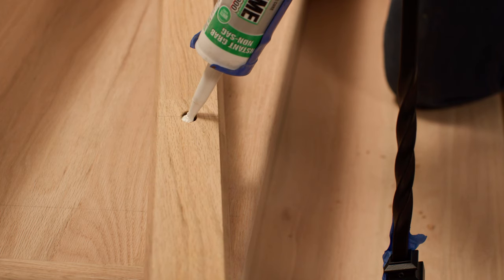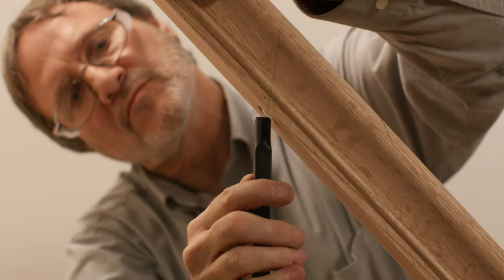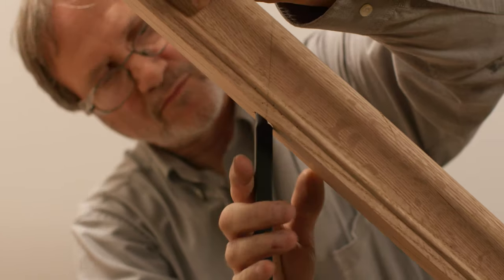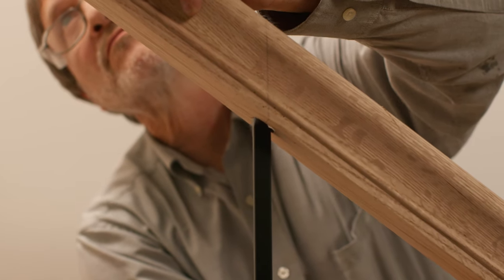Fill the holes in the handrail half full with adhesive. Position the handrail on top of the balusters and permanently secure the handrail to the newel post.